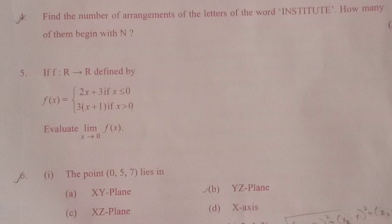Question 4. Find the number of arrangements of the letters of the word INSTITUTE. How many of them begin with N? In the word INSTITUTE, there are 3 T's, 2 I's, 1 N, 1 S, 1 U, 1 E. Since letters are repeating, we use the formula n! / (p1! × p2! × p3!). Total letters = 9, so n = 9. P1 = 3, P2 = 2, P3 = 1. Total arrangements = 9! / (3! × 2! × 1!) = 362880 / (6 × 2 × 1) = 362880 / 12 = 30,240.